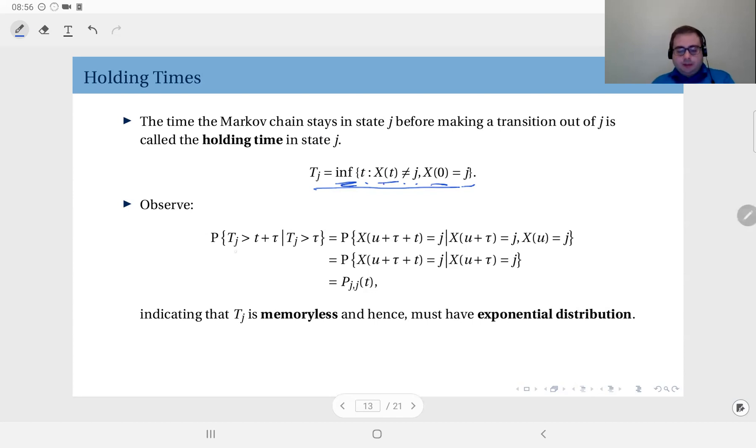Now, if you write the probability that the holding time exceeds t+τ, given that it already has exceeded τ, I can write this as, I was at state j at time u, and then a τ amount of time passed, I'm still at j. So these two I have observed. Given these, a further amount of time t has passed. So at time u+τ+t, I'm still at j. I've not made the transition yet out of state j. But then you see X here is a Markov chain. So inherently it's a Markov process. So since u+τ is more recent than u, this goes away due to the Markov property. So I'm left with this.